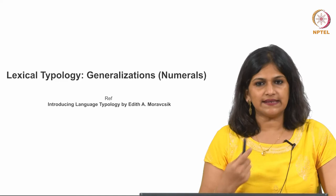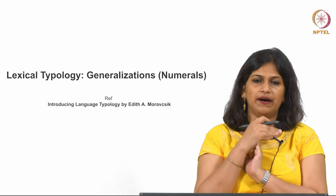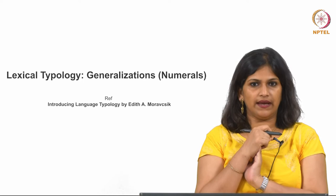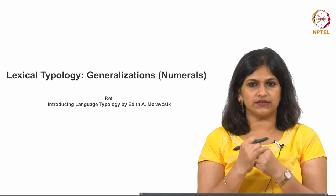We have so far discussed body parts, kinship terms, and personal pronouns, along with the related generalizations. We have seen the complexity and simplicity involved in the semantic and morphological domains for all three areas.